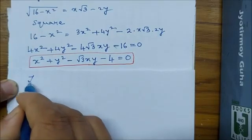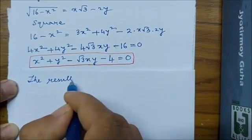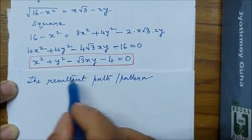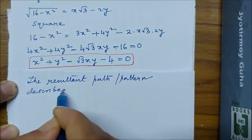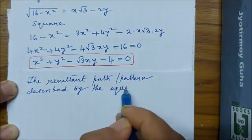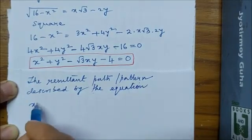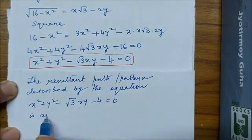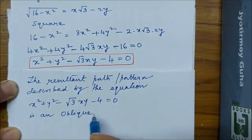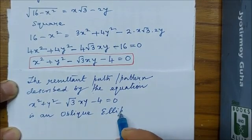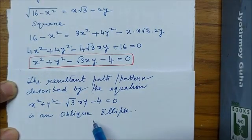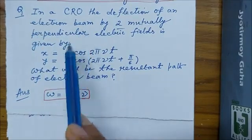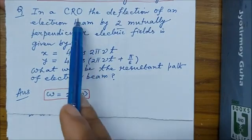So we conclude that the resultant path or pattern described by this equation is an oblique ellipse, oblique with respect to x and y axis. And this oblique ellipse will be traced by the electron beam due to these two electric fields applied in a CRO.